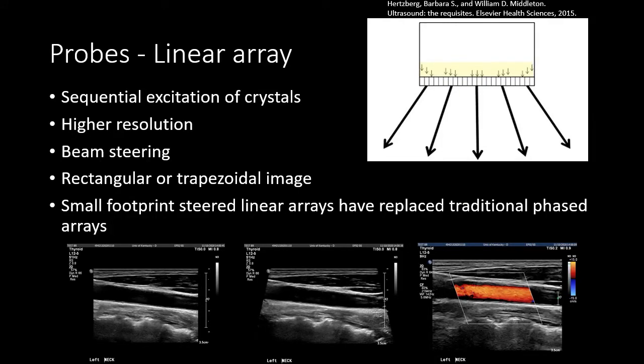A linear array probe is what we traditionally use for high resolution imaging of superficial structures. Unlike a phased array, the crystals do not all excite at the same time — there is sequential excitation of the crystals, which results in higher resolution. Pulses generated by the linear probe can be angled or steered to create rectangular or trapezoidal imaging. Small footprint linear arrays have in many instances replaced traditional phased arrays because of their better resolution, and we often use these for superficial imaging like the neck or extremities.